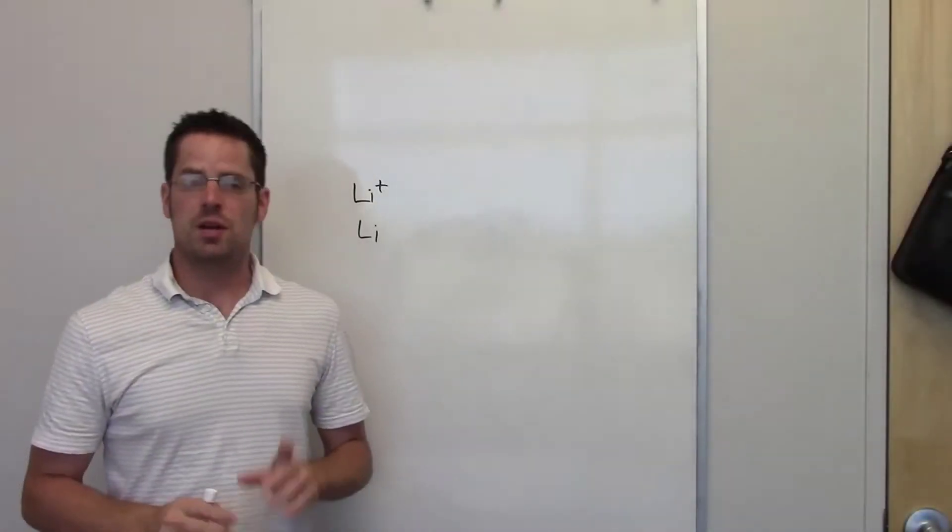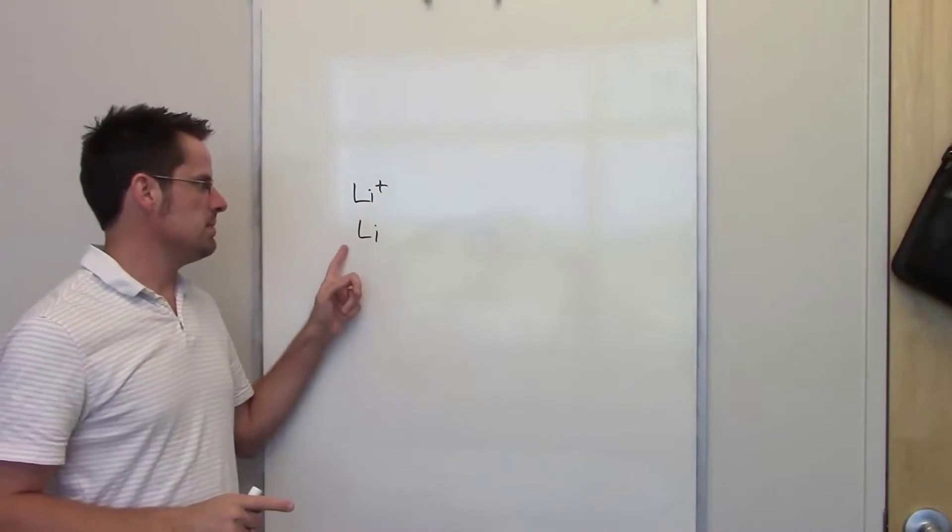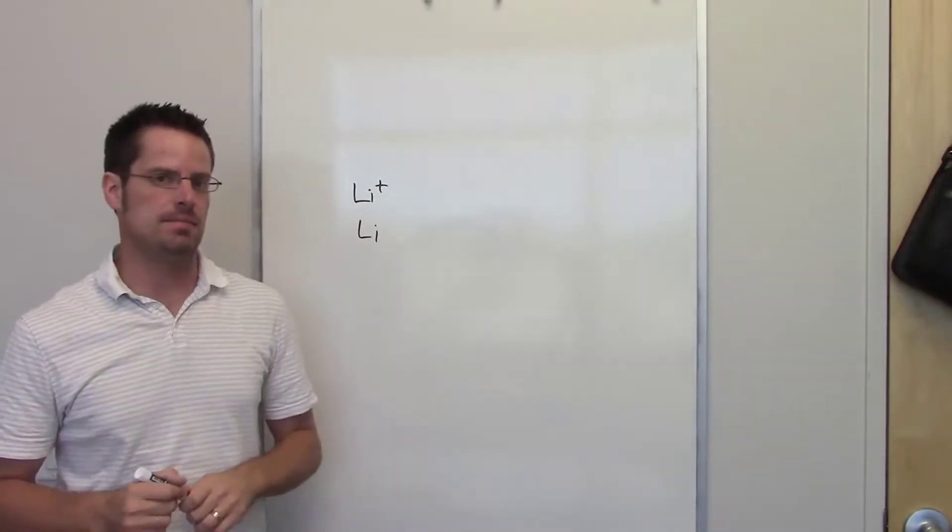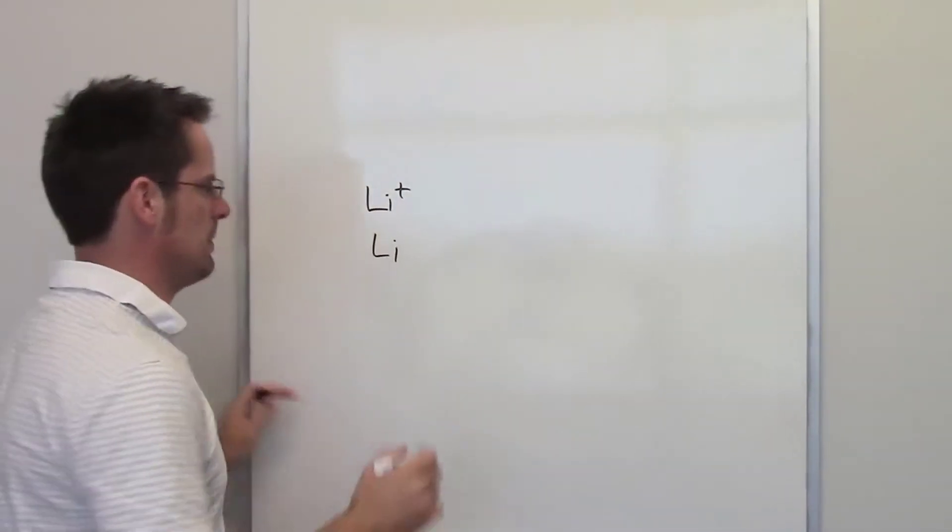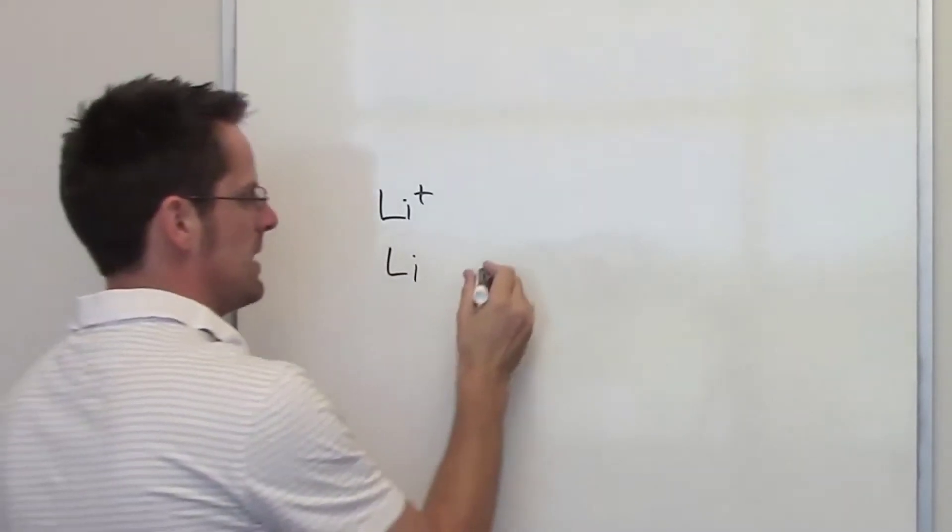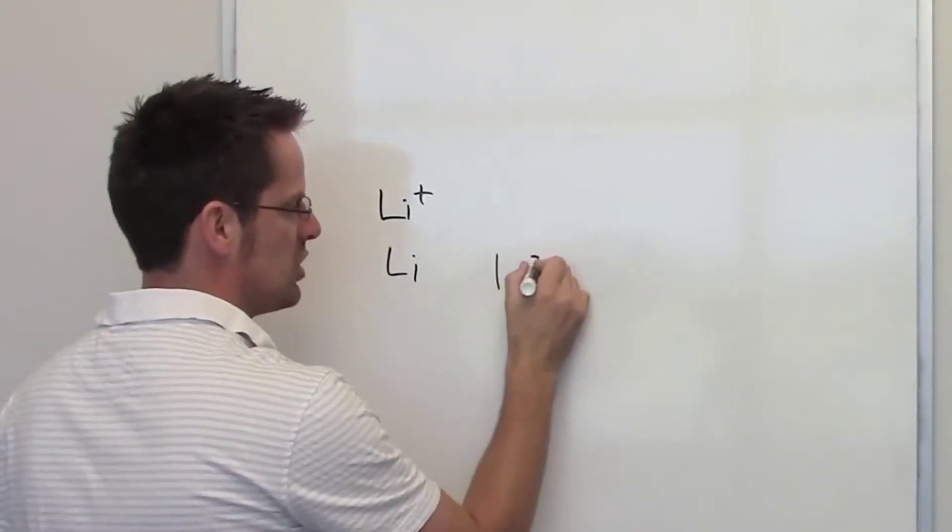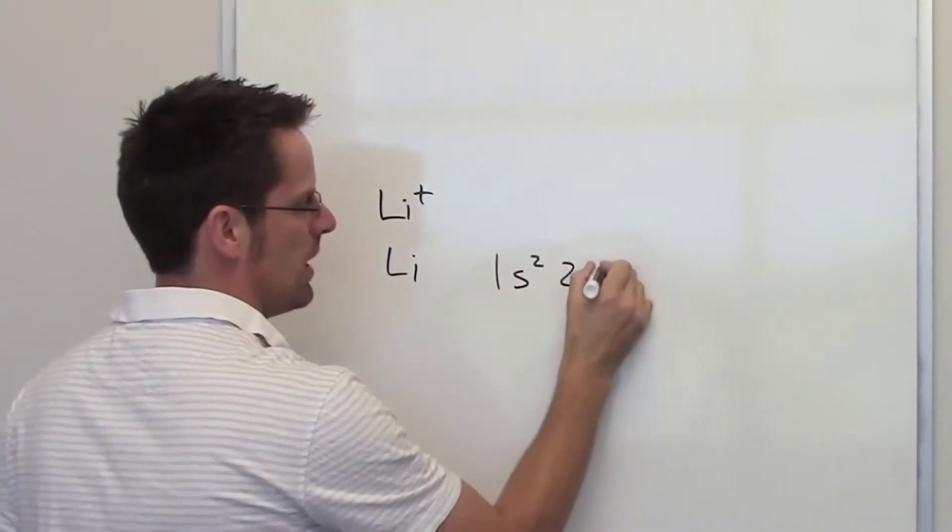In this first question, we're asked to compare the sizes of neutral lithium with lithium cation. As we look at the periodic table, you can see that neutral lithium has an electron configuration of 1s2, 2s1.